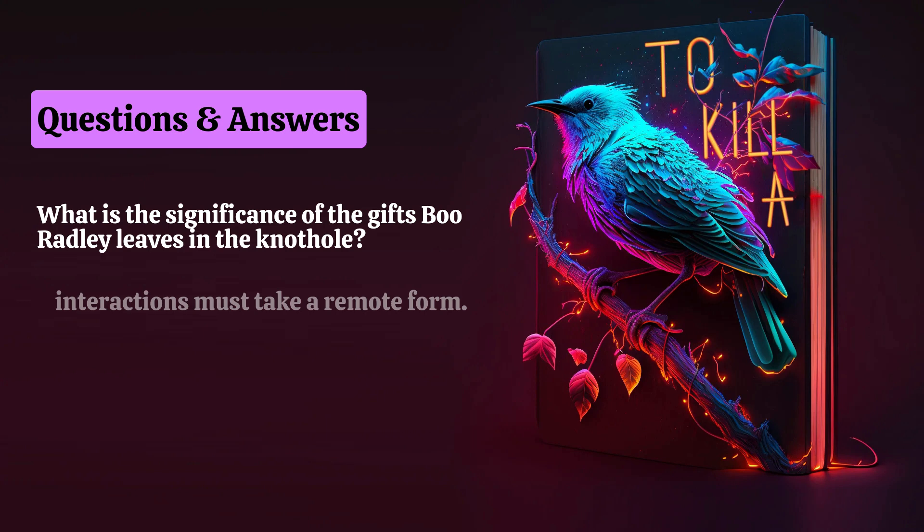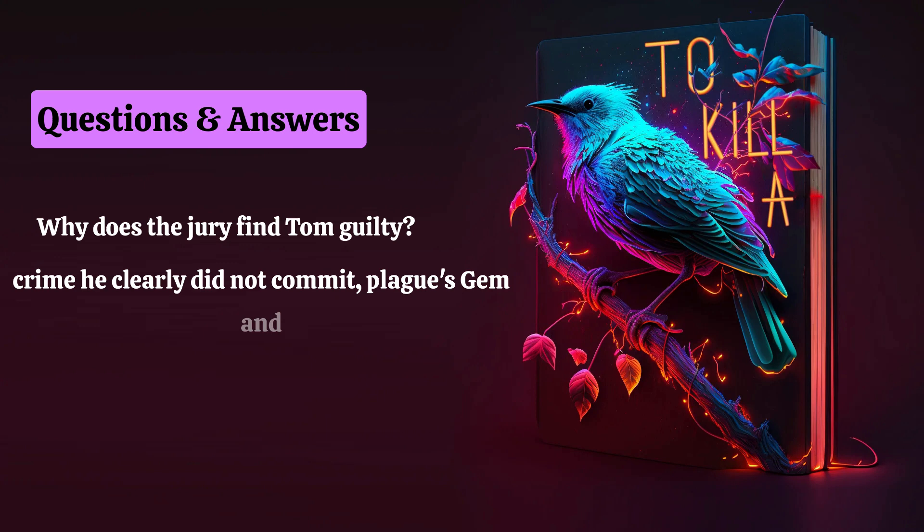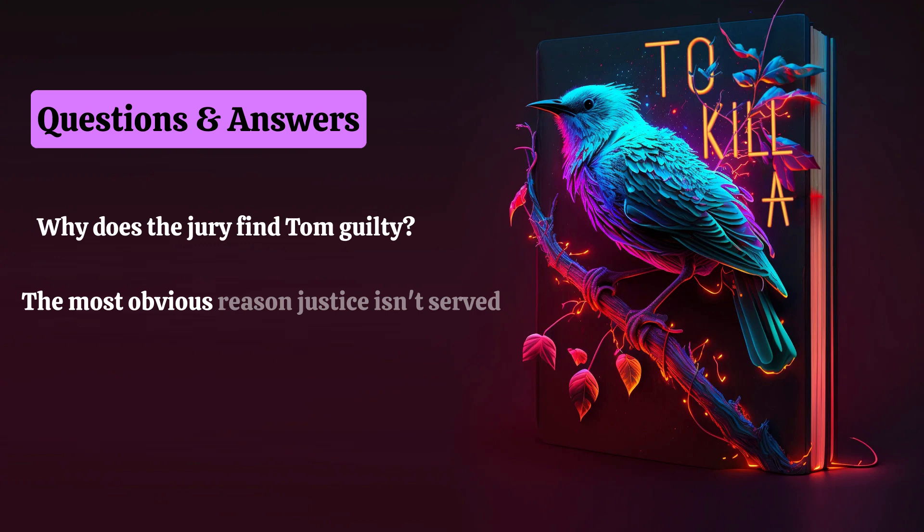Why does the jury find Tom guilty? The jury's decision to convict Tom Robinson for a crime he clearly did not commit plagues Jem, and many readers, as an intolerable miscarriage of justice. The most obvious reason justice isn't served is because the jury's overwhelming racism prevents Tom from getting a fair trial.